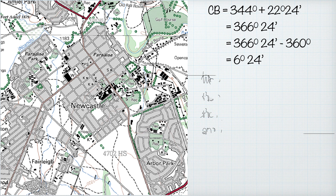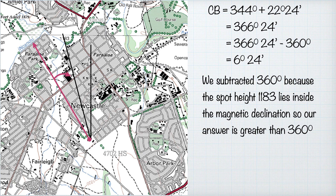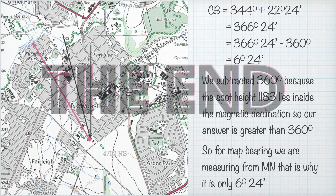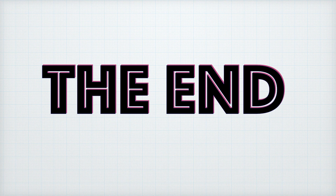Since bearing only works up to 360 degrees, we subtract 360, giving a compass bearing of 6 degrees 24 minutes. This makes sense because the line joining the two points falls inside the magnetic declination angle — measuring from magnetic north it's only a small angle, whereas the map bearing measured the full angle from true north all the way around. In this presentation we've covered direction, map bearing, and updating magnetic declination, which are key skills for interpreting a map.